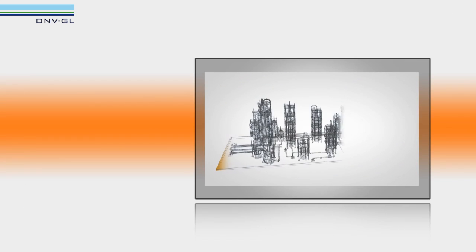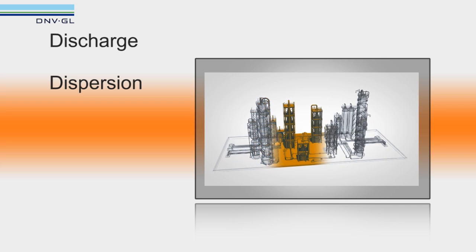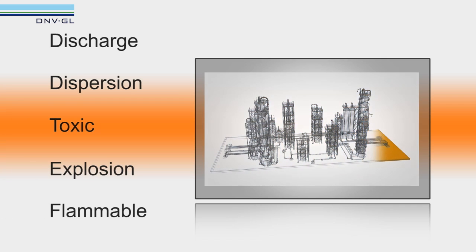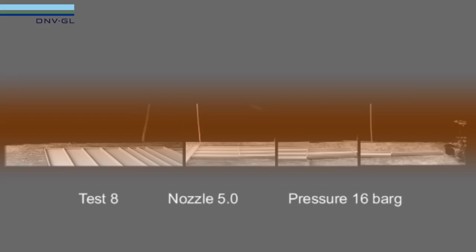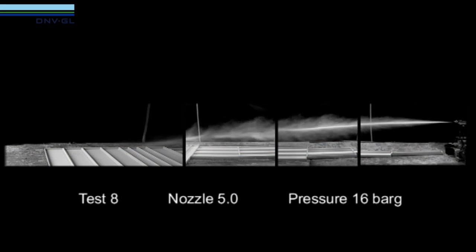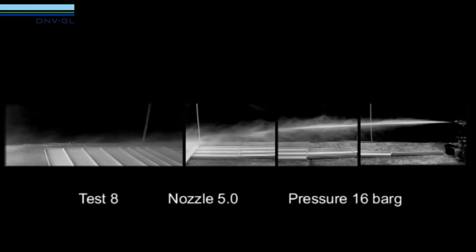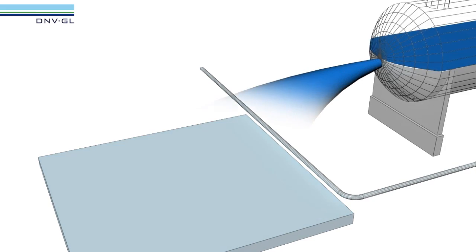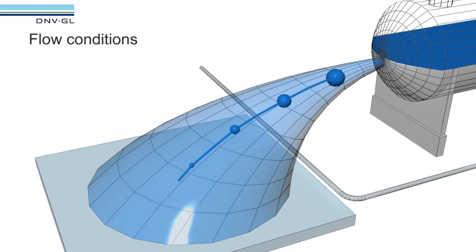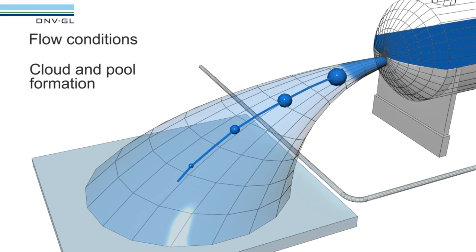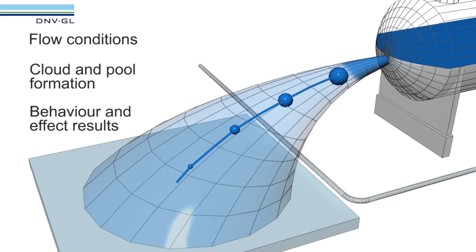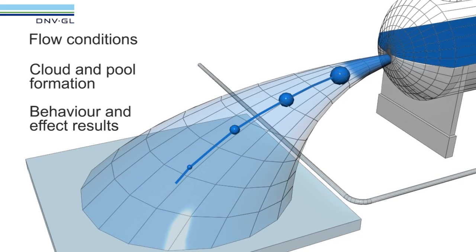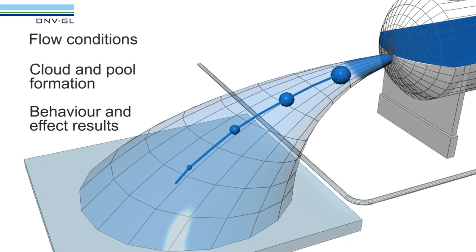FAST contains a complete suite of linked discharge, dispersion, toxic, explosion and flammable effect models. All models are continuously validated against experimental data. Details of the accidental release will be calculated, including discharge flow conditions, cloud and pool formation and behaviour, and effect results relating to any toxic, flammable and explosive hazards.